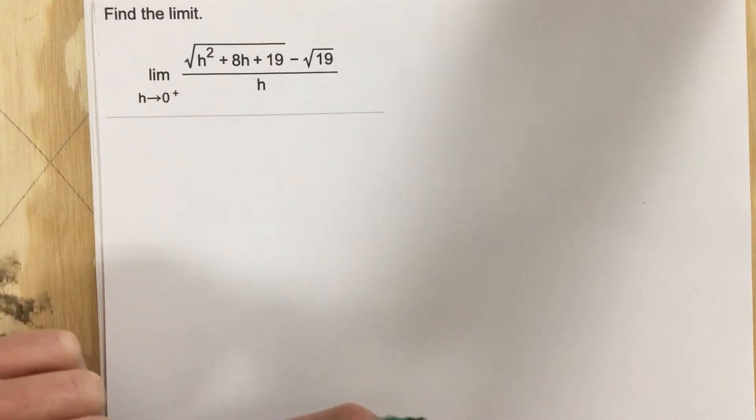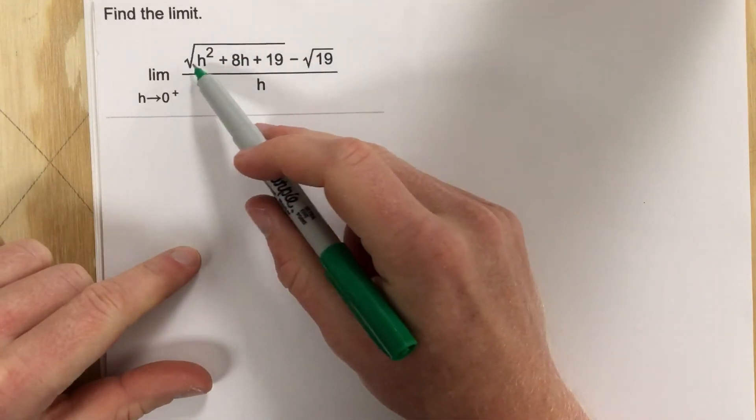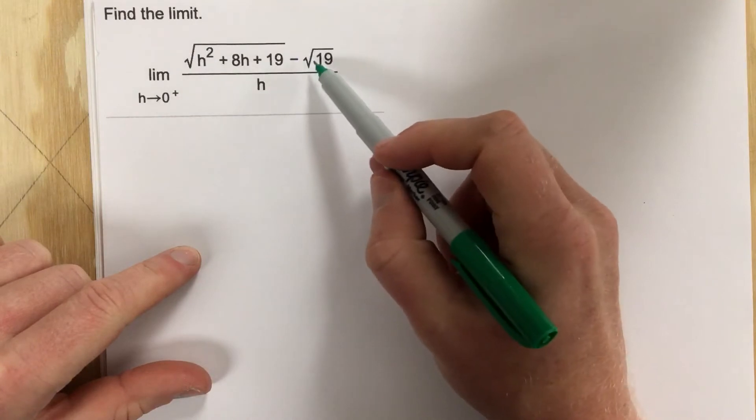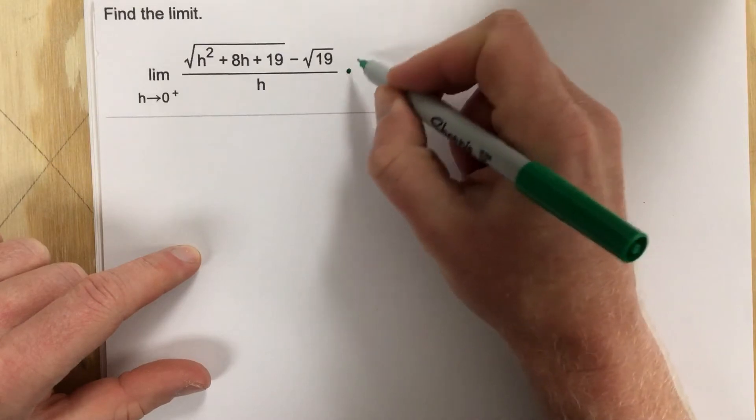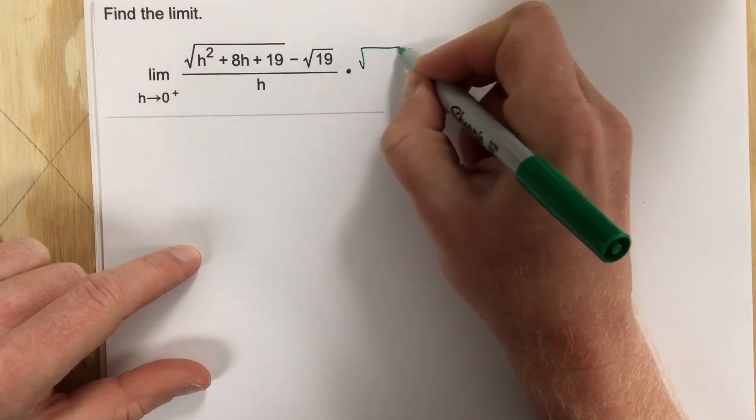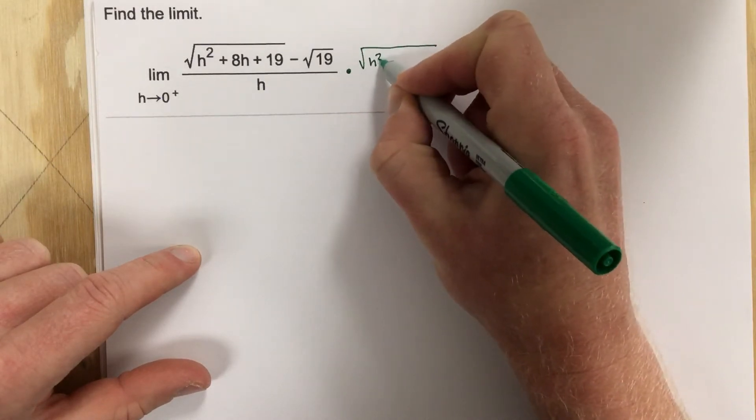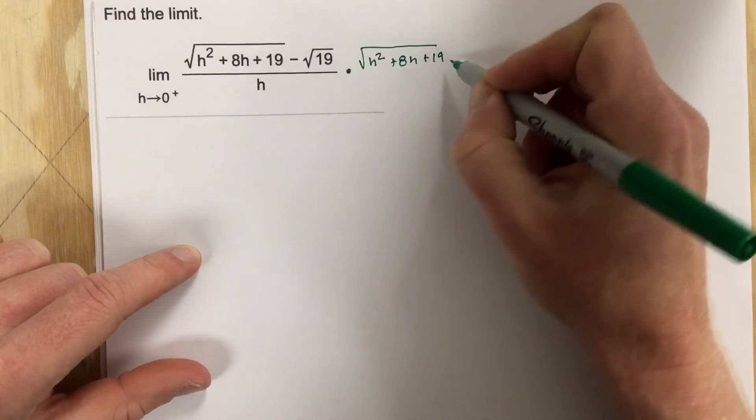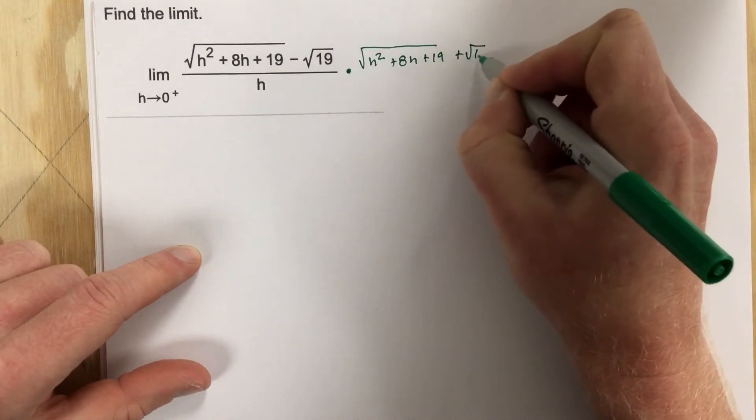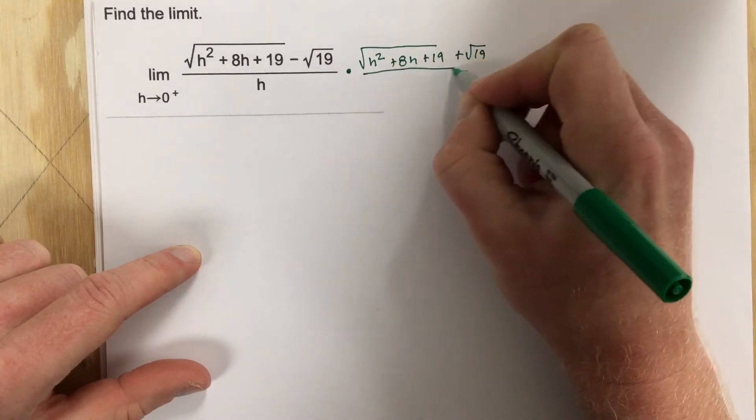So this is how you can start this. I notice that I have a radical minus another radical. Usually when I see this I think I need to multiply by the conjugate. So I'm going to multiply by root h squared plus 8h plus 19 plus root 19 and then I'm going to do the same thing to the bottom.